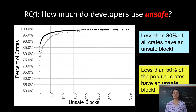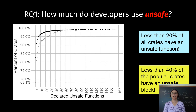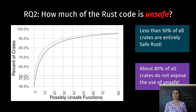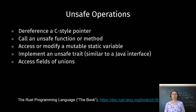We found that less than 30 percent of all crates have an unsafe block, while almost half of the most downloaded ones have unsafe present. Less than 20 percent of all crates contain a declared unsafe function, and it is slightly more prevalent in popular crates at 40 percent. Fewer than 20 percent of the crates expose the use of unsafe Rust, but more than half of them are actually potentially unsafe. We further looked at the unsafe operations, which are: dereferencing a C-style pointer, calling an unsafe method or function, accessing or modifying a mutable static variable, implementing an unsafe trait, and accessing fields in unions.